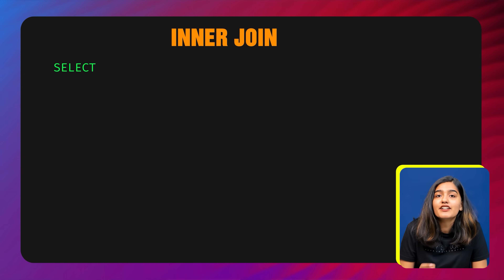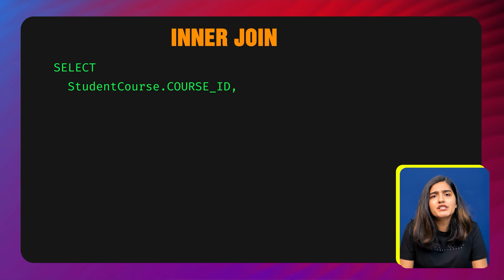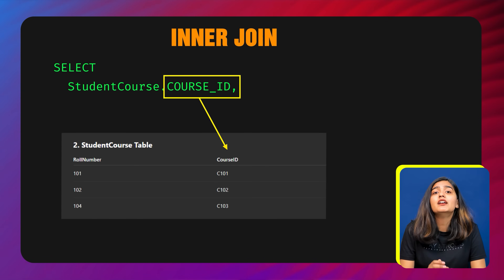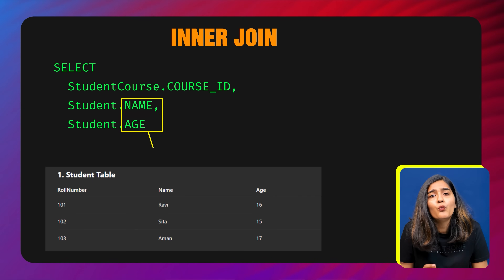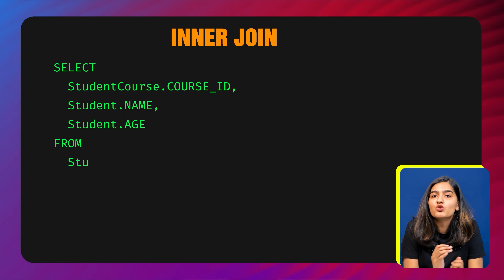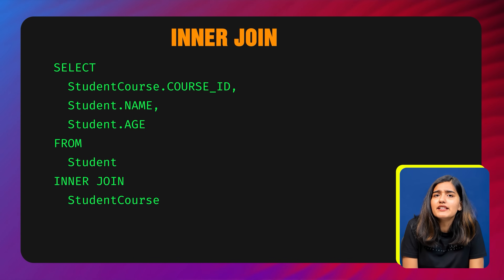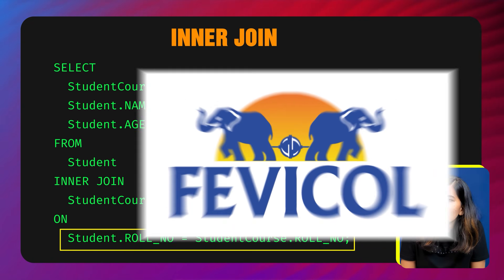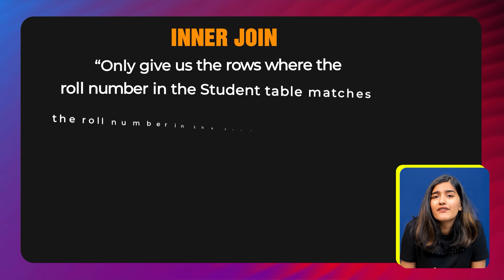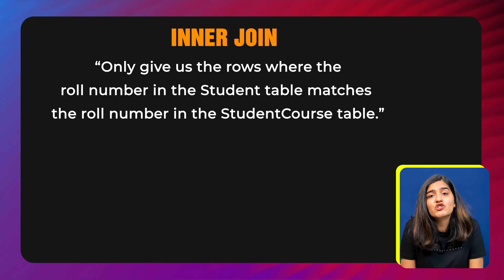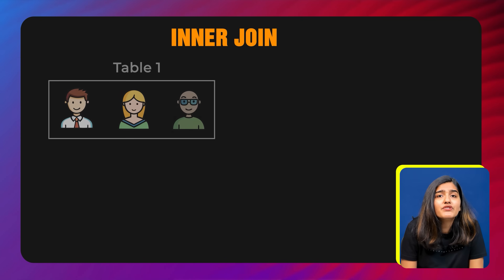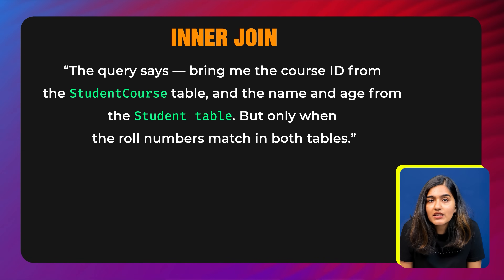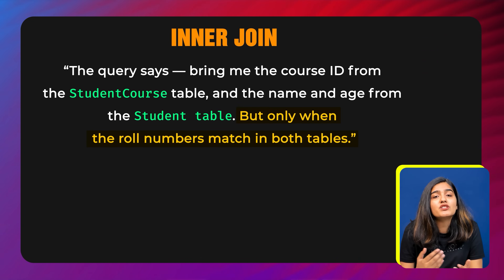Our query will look like: SELECT student_course.course_id, student.name, student.age FROM student INNER JOIN student_course ON student.roll_number = student_course.roll_number. First we tell SQL what we want to see — the course ID from the student course table and name and age from the student table. The INNER JOIN line means join it with the student course table. The ON condition is the glue: it says only give us rows where the roll number in the student table matches the roll number in the student course table. In simple terms, if the student exists in both tables, include them in the final result.